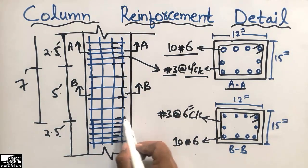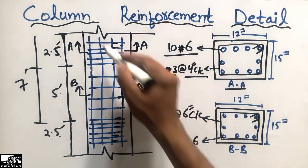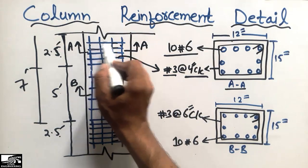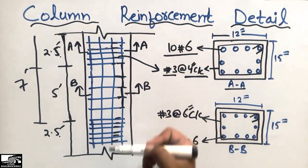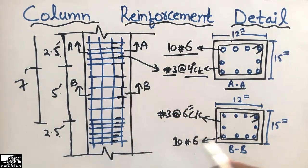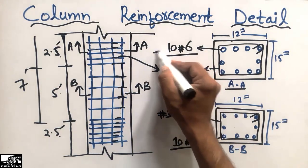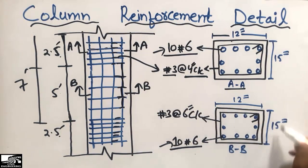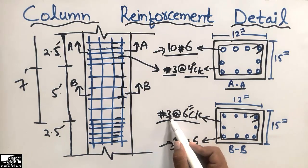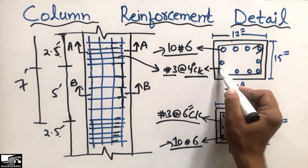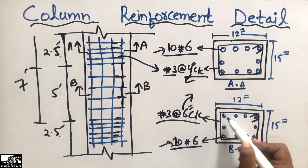At the ends and start of the column there is high shear demand, so we provide the ties at a close distance. At the middle there is no such high demand, so ties are at a greater distance. In section BB, all other details are the same — ten number six bars, same dimensions — but the only difference is that number three ties are provided at six inches center to center, while in section A they are at four inches center to center.